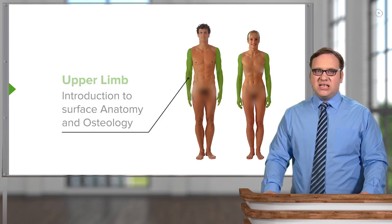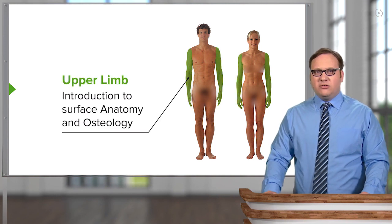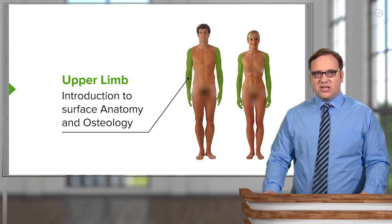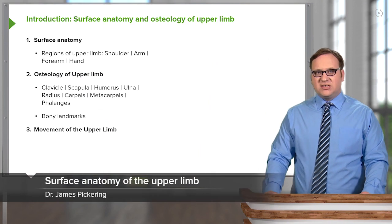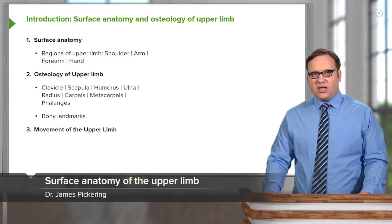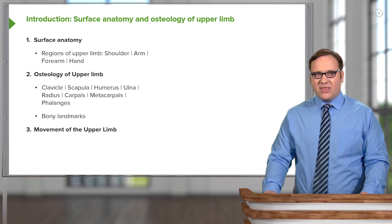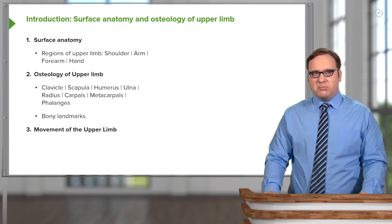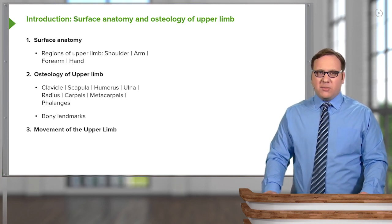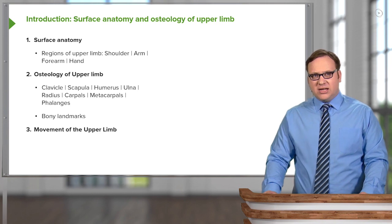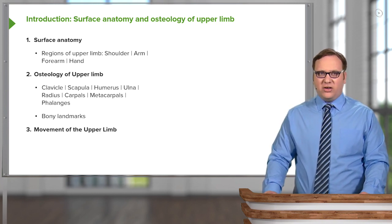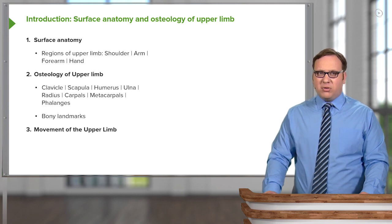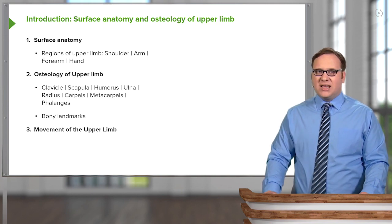In this lecture, the first in a series about the upper limb, we're going to look at the surface anatomy and osteology of the entire upper limb. We'll look at the surface anatomy of the shoulder, the arm, the forearm, and the hand. Then we'll move on to the osteology: the clavicle, the scapula, the humerus, ulna, radius, the carpal bones, the metacarpals, and the phalanges.